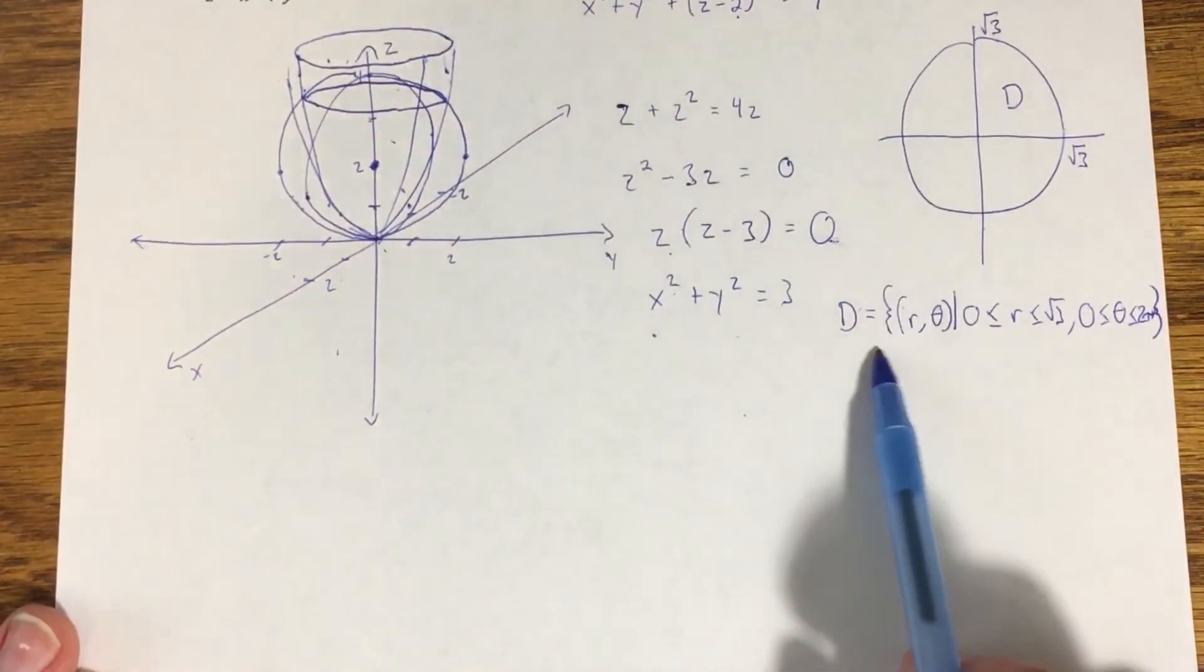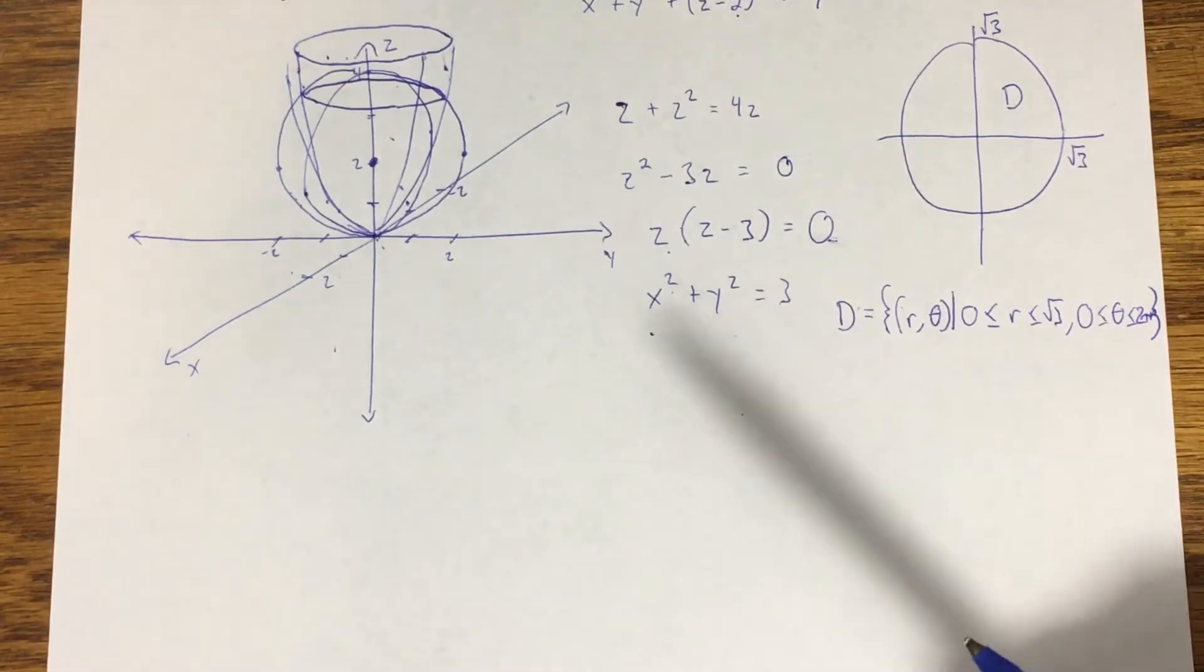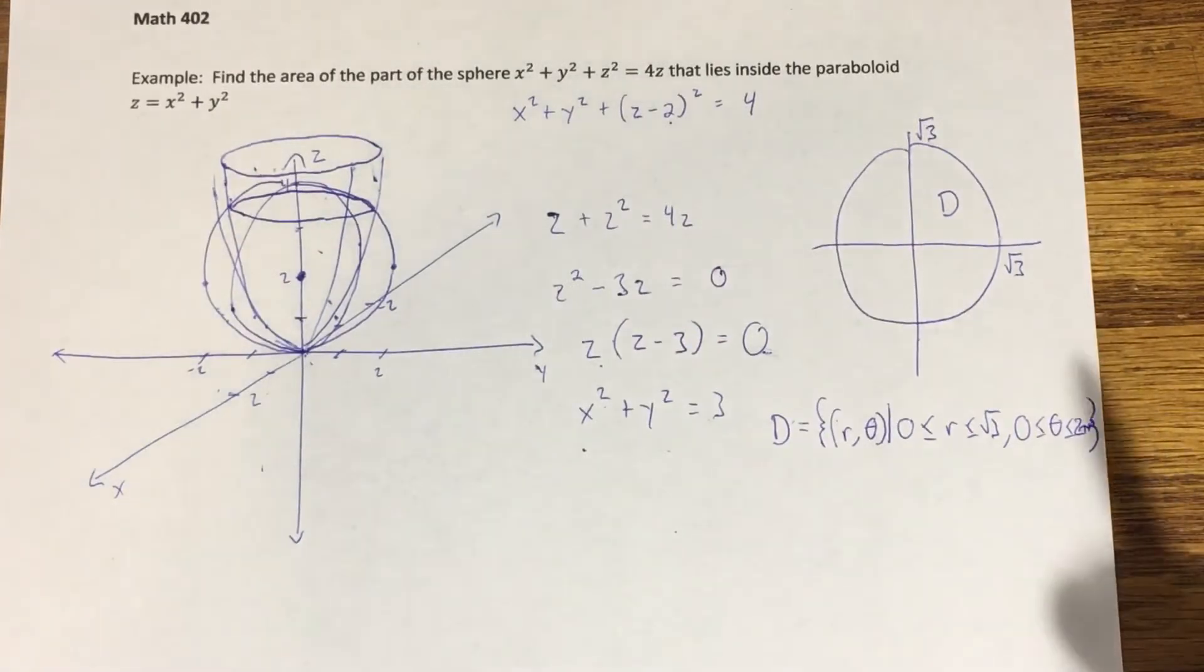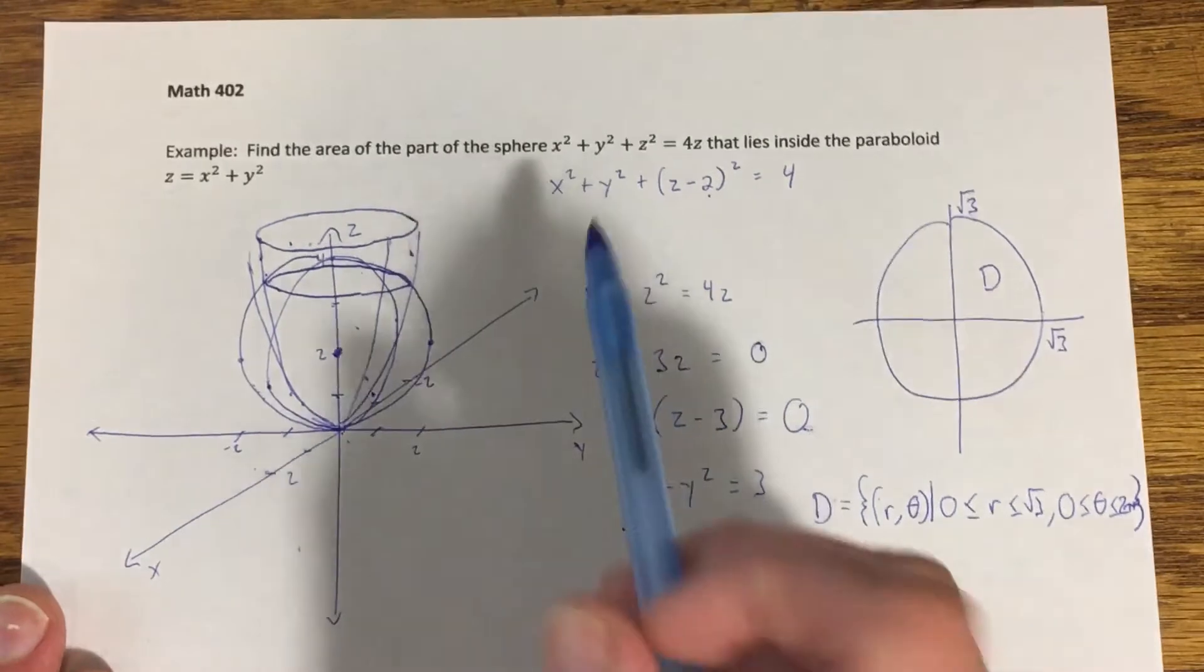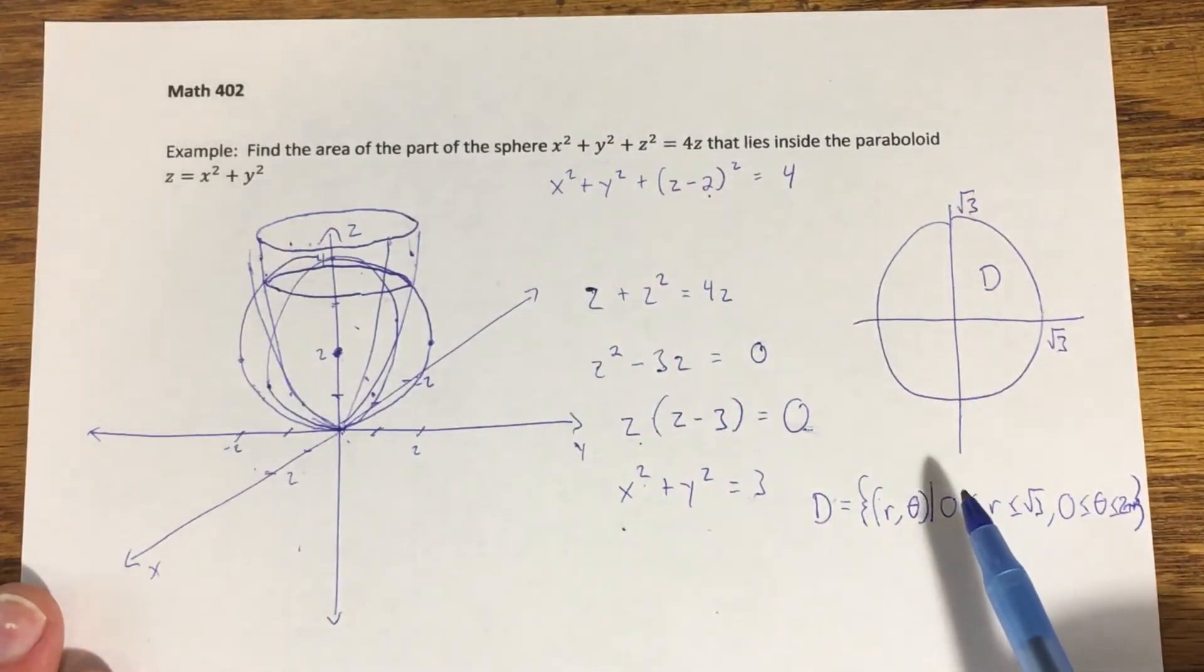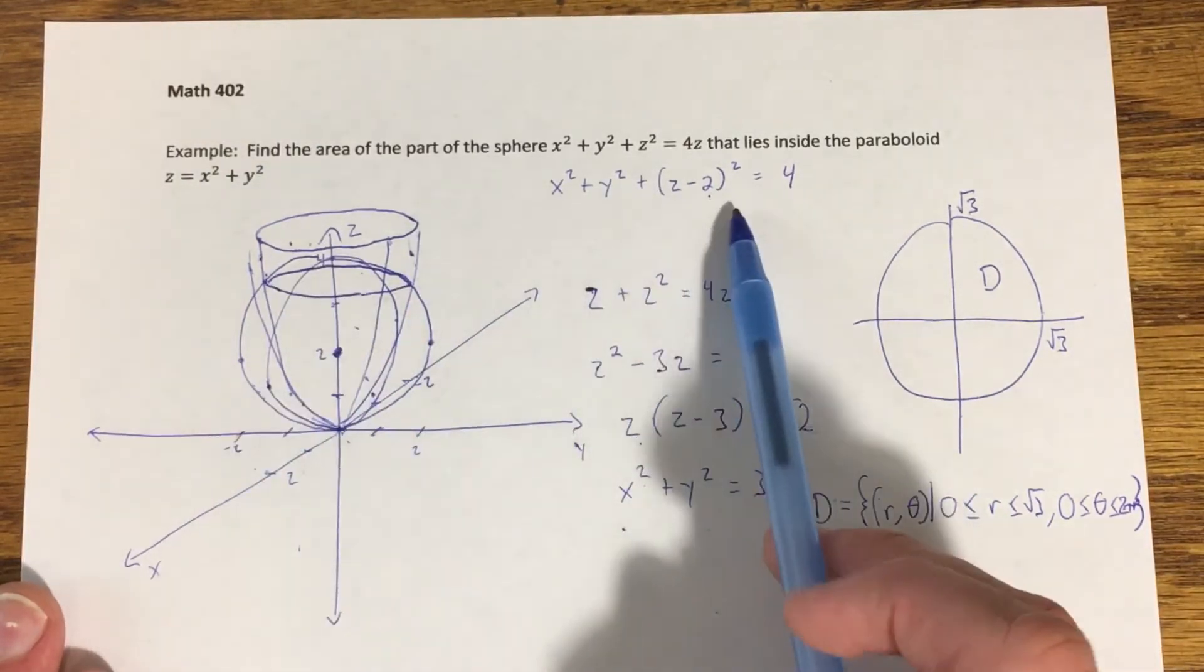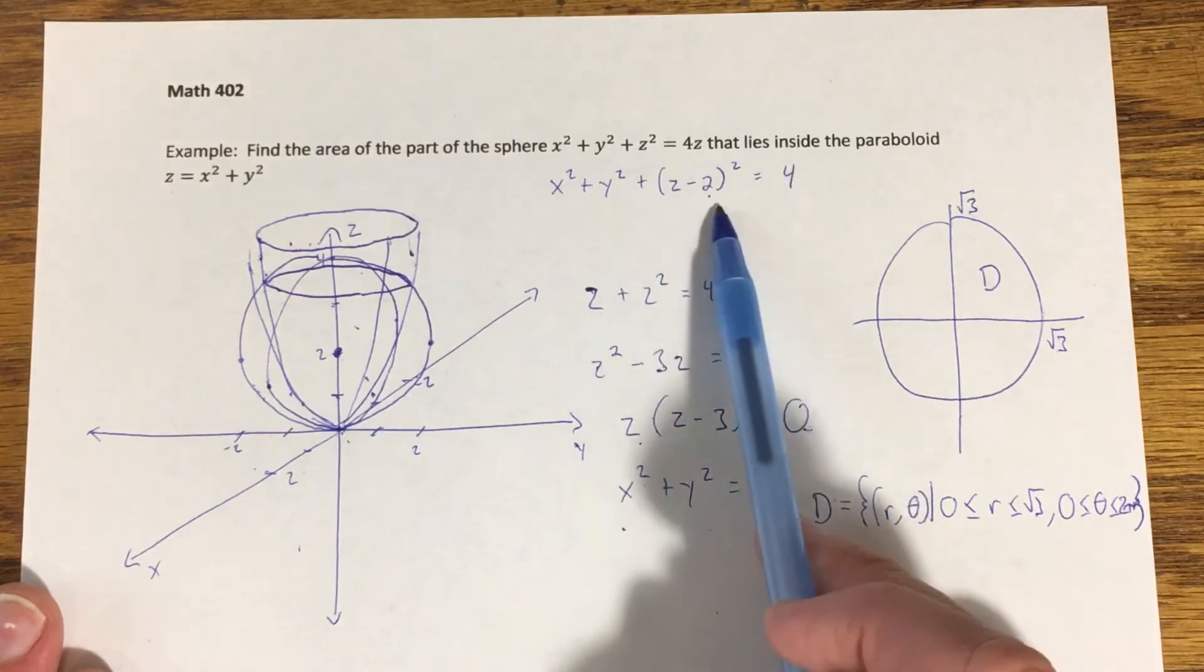This is giving me the region, but now I need to know what I'm putting in for my integrand. The surface area formula requires me to have my partial derivatives of z with respect to both x and y. It's the sphere specifically that we're trying to find the surface area of for that piece of the sphere I'm calling the cap. Here's the equation of that sphere after completing the square.